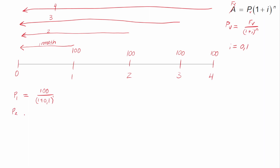Just like in the future value video, we're going to use a geometric sequence, because we want to add all of these present values together. So we add PV1 + PV2 + PV3 + PV4 to find the total present value of all four payments.